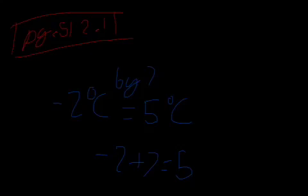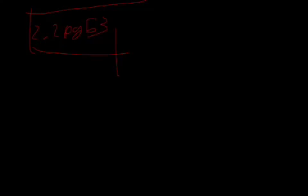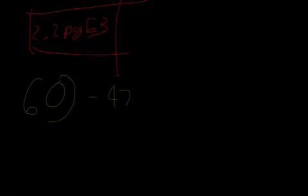If we move into 2.2 directed numbers on page 53, we can actually do some calculations. Most of these are really easy. Let's try question 60, which is negative 47 minus minus 16.